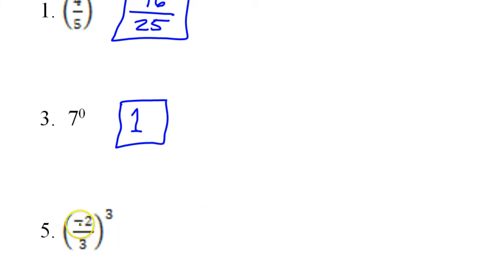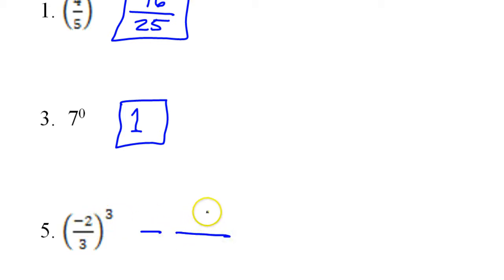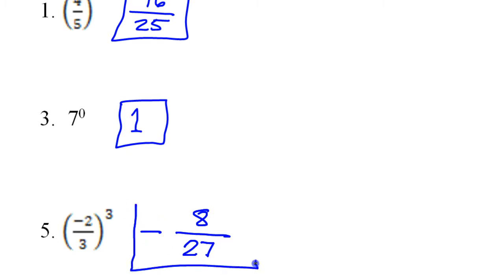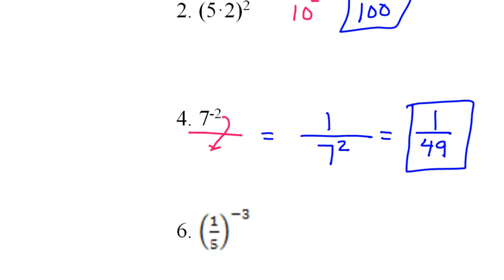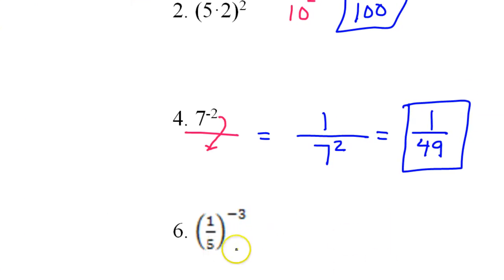Remember that if you raise a negative number to an odd power it stays negative. So at the end of the day this is still going to be negative — 2 to the third power is 8 and 3 to the third power is 27, so this will be negative 8 over 27. The key is the negative stays. If this had been an even power like 2 or 4, the negative would have gone away.